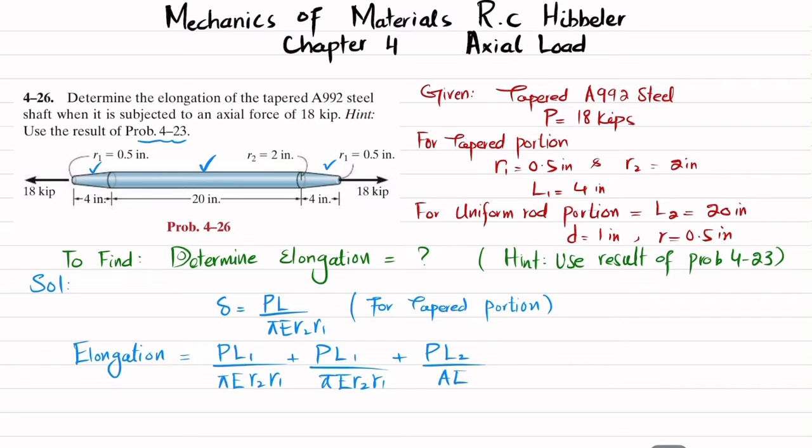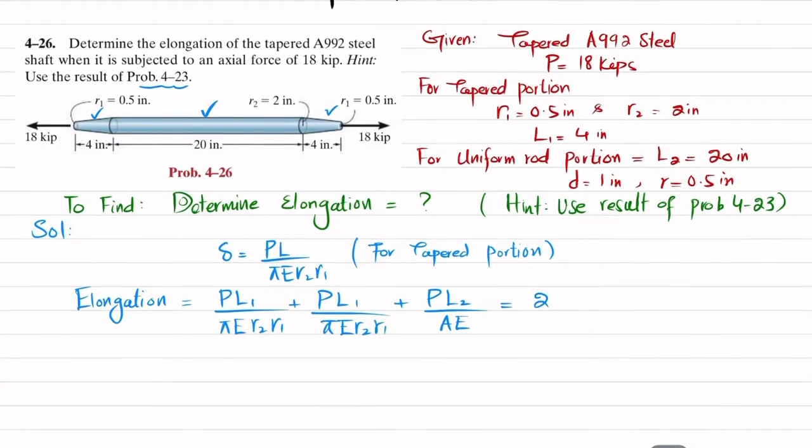From here you can see that you have 2 times P times L1 divided by pi times E times R2 times R1, plus PL2 divided by A times E.